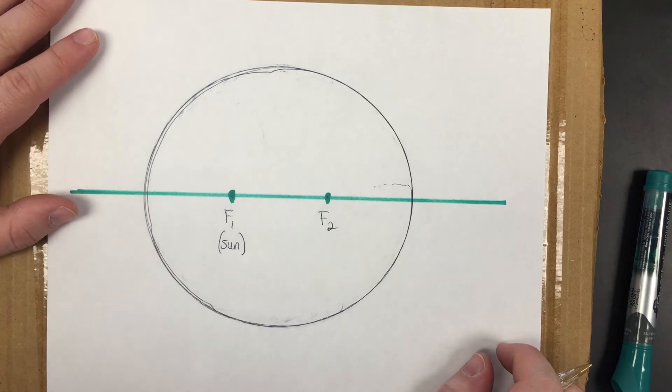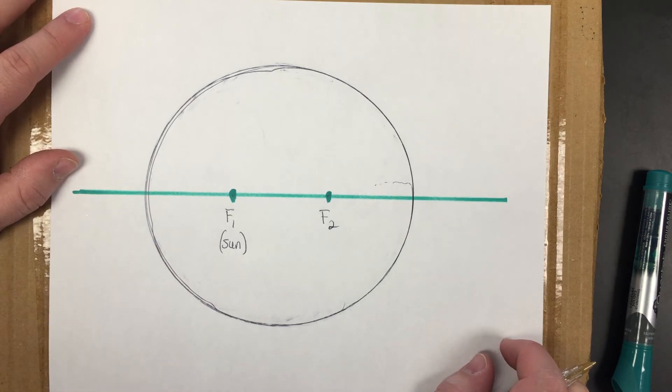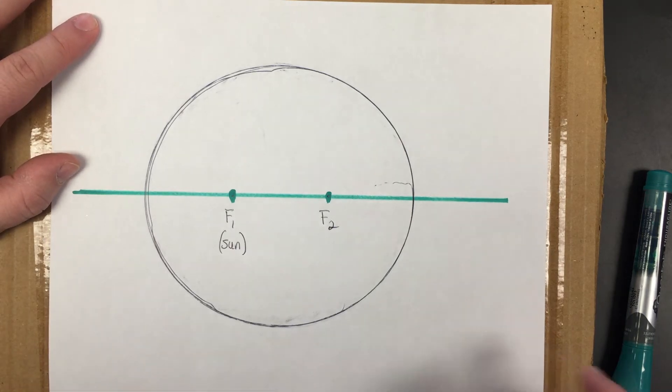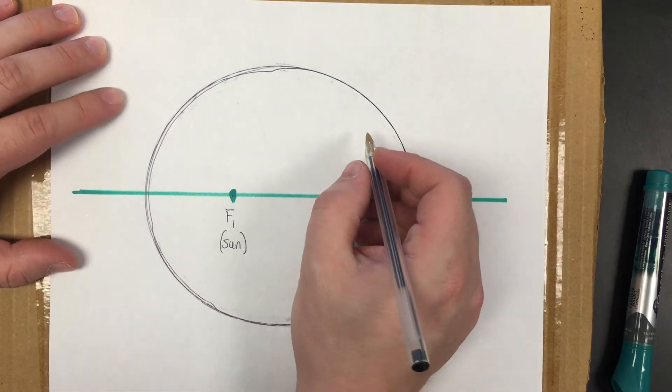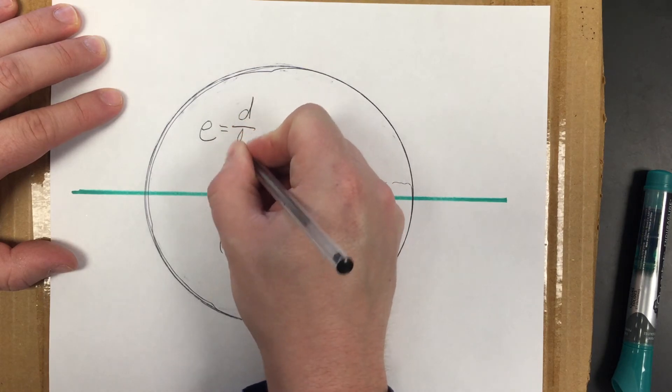Next thing we want to do is calculate the eccentricity of this ellipse or how not round it is. If we had an eccentricity of 0, that would be something that's a perfect circle. If we had an eccentricity of 1, that would be a line. But we want to calculate that using this formula. It's also on the front of your ESRT. E equals D over L.